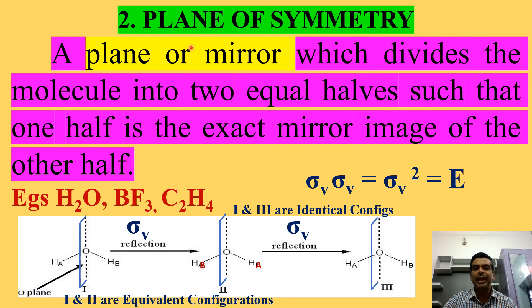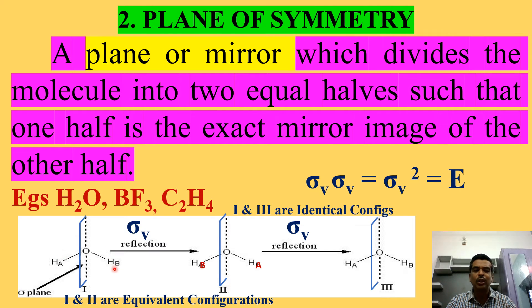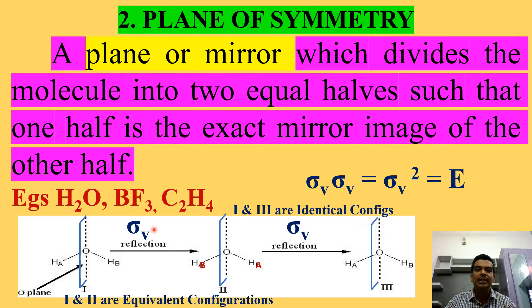Now, what is the plane of symmetry? A plane or mirror which divides the molecule into two equal halves such that one half is exactly the mirror image of the other. For example, in a water molecule, there are two hydrogens attached to oxygen. There is a plane drawn here, and after one sigma v operation, HA becomes HB and HB becomes HA. This is the vertical plane of symmetry. The hydrogens are interchanged, and the configurations one and two are equivalent — not the same, but equivalent.